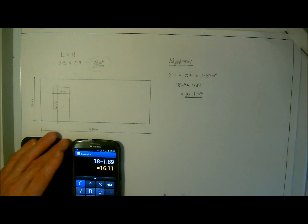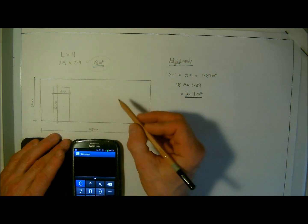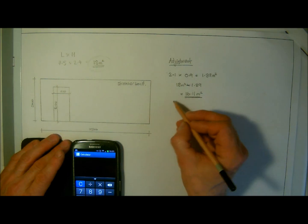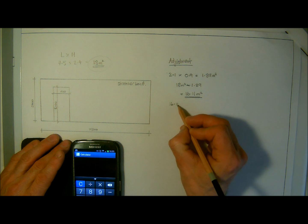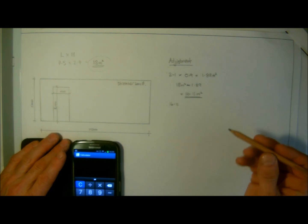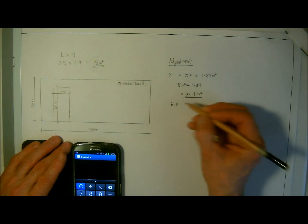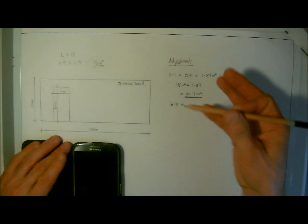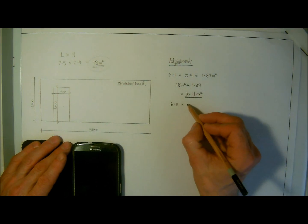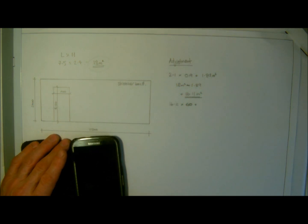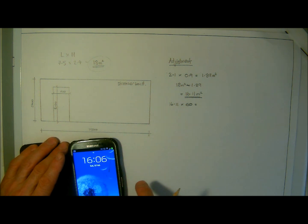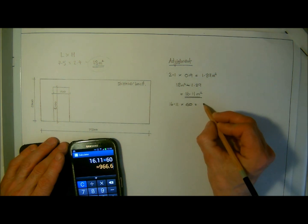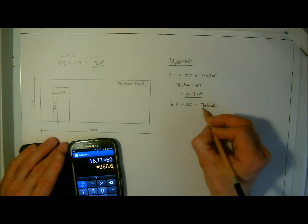With this being a cavity wall, it's highly likely that it would be in stretcher bond. With stretcher bond, we're looking at sixty bricks per square meter. If you're watching this for the first time, go back to calculations lessons one, two and three where we go through all of this in more detail. We've got sixty bricks, so sixteen point one one multiplied by sixty gives us nine hundred and sixty six bricks.